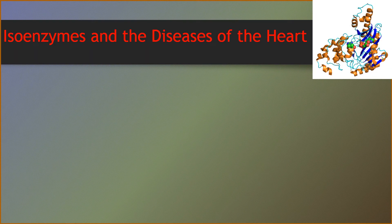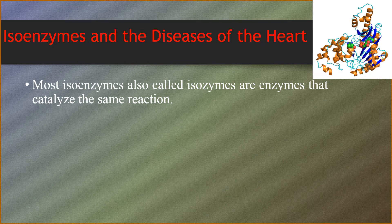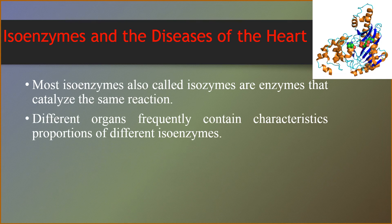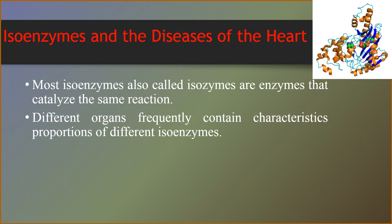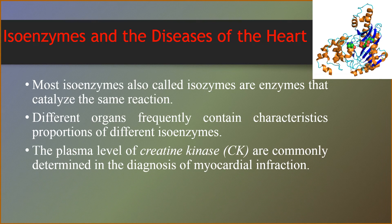The disease of the heart: most isoenzymes, also called isozymes, are enzymes that catalyze the same reaction. However, they do not necessarily have the same physical properties because of genetically determined differences in amino acid sequence. For this reason, isoenzymes may contain different numbers of charged amino acids and may therefore be separated from each other by electrophoresis. Different organs frequently contain characteristic proportions of different isoenzymes. The pattern of isoenzymes found in the plasma may therefore serve as a means of identifying the site of tissue damage. The plasma levels of creatine kinase are commonly determined in the diagnosis of myocardial infarction, and are particularly useful when the electrocardiogram is difficult to interpret, such as when there have been previous episodes of heart disease. The figures show the ribbon representation of creatine kinase structure.